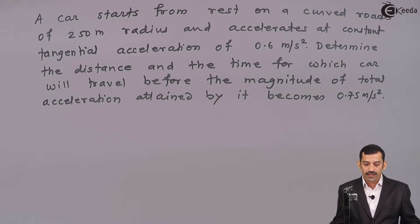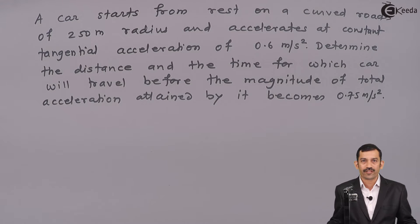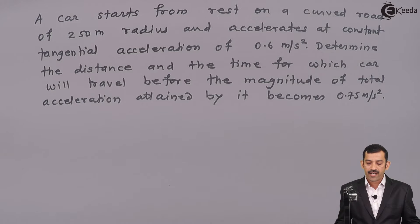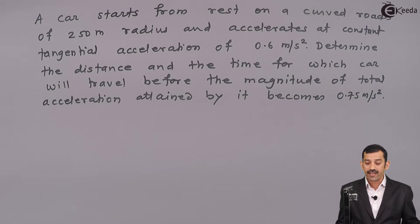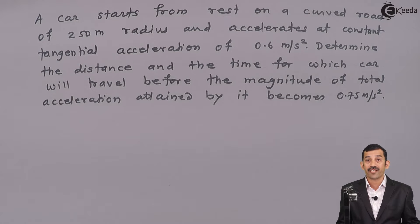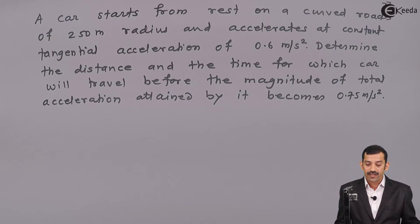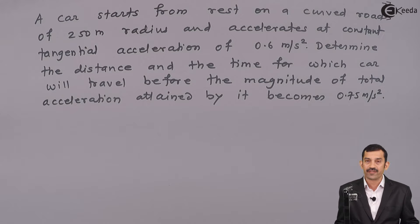Hi friends, we will solve a problem on curvilinear motion. A car starts from rest on a curved road of 250 meter radius and accelerates at a constant tangential acceleration of 0.6 meter per second square. Determine the distance and the time for which the car will travel before the magnitude of total acceleration attained by it becomes 0.75 meters per second square.